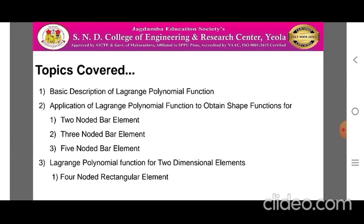The topics covered during today's session are: first, a basic introduction of Lagrange's polynomial function; second, application of this Lagrange's polynomial function to evaluate the shape functions for different types of elements. These elements include two-noded bar elements, three-noded bar elements, and five-noded bar elements. Also, the application of Lagrange's polynomial function for two-dimensional elements is explained by considering the example of four-noded rectangular elements.